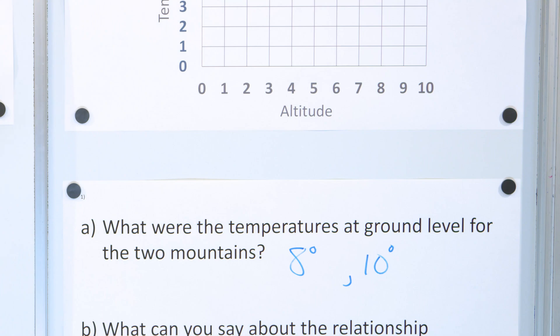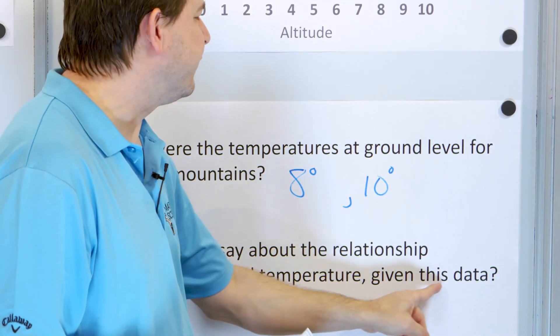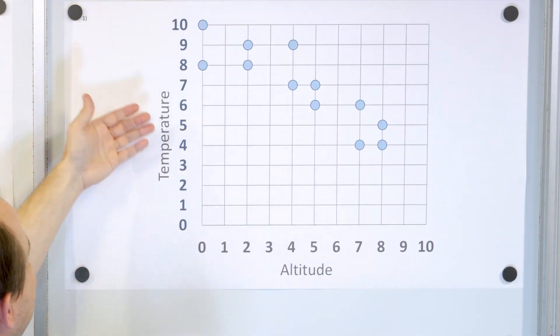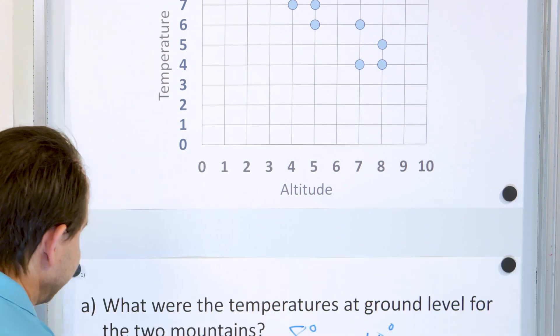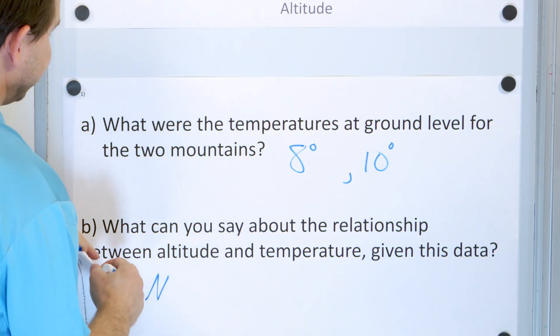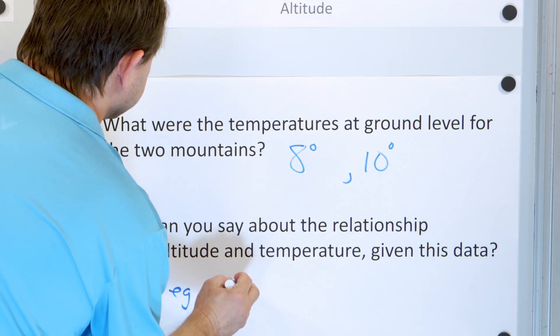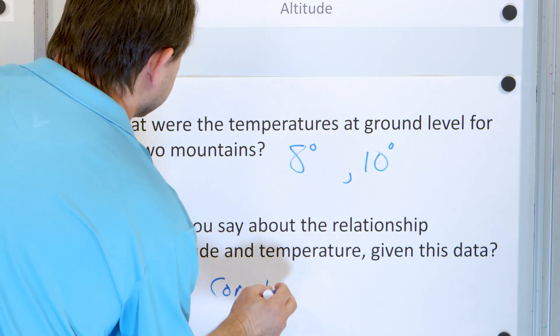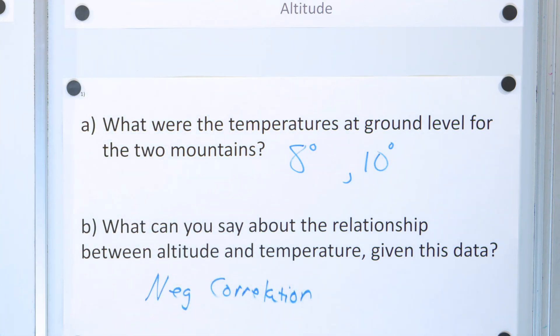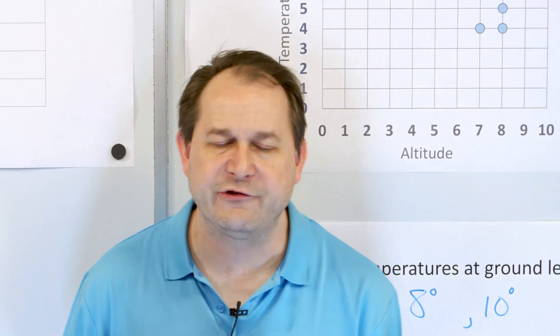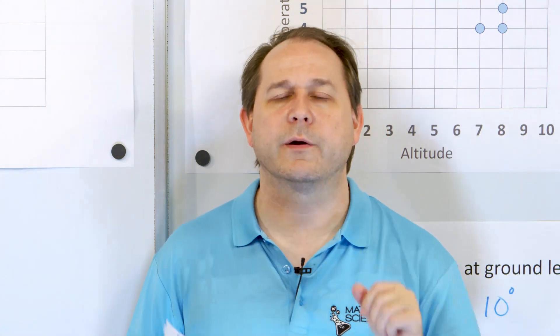Problem number two, what can you say about the relationship between altitude and temperature? We already gave it away. It's a negative correlation. That just means as the altitude goes up, the temperature goes down. So I told you these problems would be pretty quick. We're just answering quick questions to try to get a feel for different situations, interpreting what the scatter plot is telling us. Let's take this down and work problem number two.